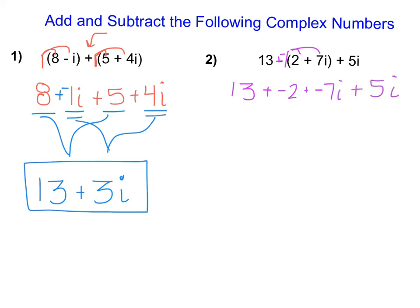And now that I've gotten rid of all of the parentheses, I'm going to focus on combining like parts. So here I see that my real values here are 13 and negative 2. So I'm going to combine those together to get 11. And then I see that my imaginary parts are negative 7i and 5i. And if I combine those together, I get negative 2i.